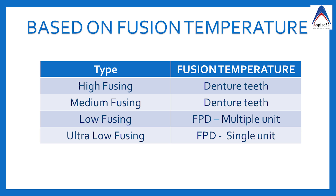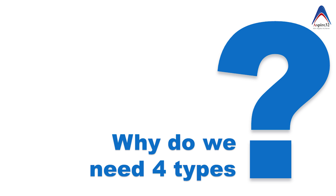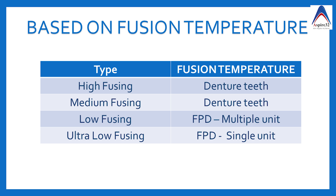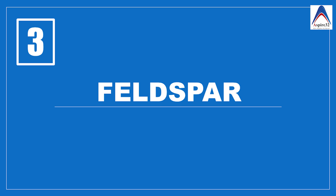An important point to remember in this classification: if you are fabricating a bridge that will bear a lot of force, you should use a low fusing ceramic rather than ultra low fusing, because although ultra low fusing has a lower fusion temperature, its strength will not be sufficient to bear such forces. The third important component of ceramic is feldspar, which is basically potassium aluminium silicate.